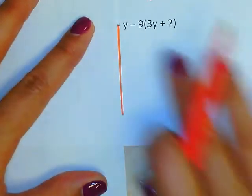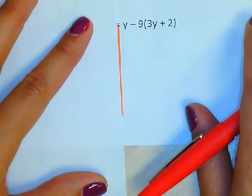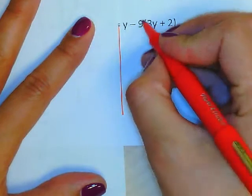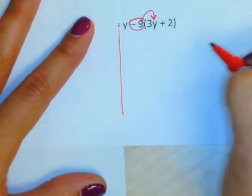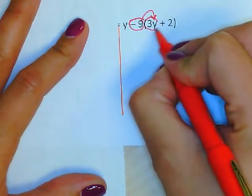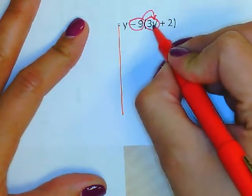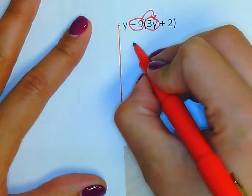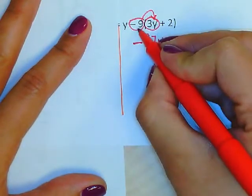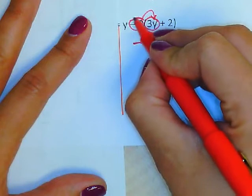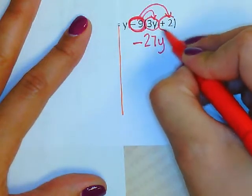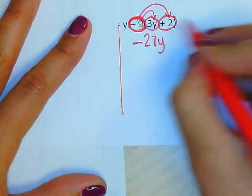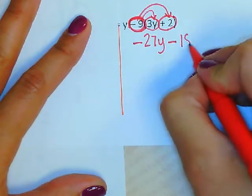Do I need to simplify here? I see multiplication, so yes, I do. Nothing happens to the y. The minus 9 needs to be multiplied into the parentheses. Minus 9 times 3y gives me negative 27y. It's one negative, only lonely. Minus 9 times positive 2 gives me negative 18.